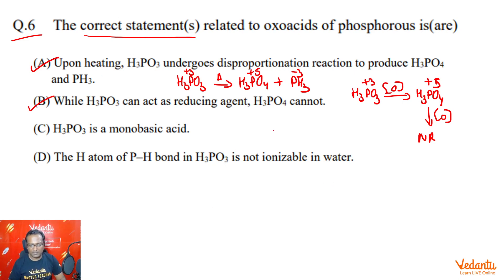H3PO3 is a monobasic acid. So, if we draw the structure of H3PO3, you will notice that the structure of H3PO3 contains two ionizable hydrogens, that is, two hydrogens which are connected to high electronegative atoms. Therefore, it is a dibasic acid, not a monobasic acid.